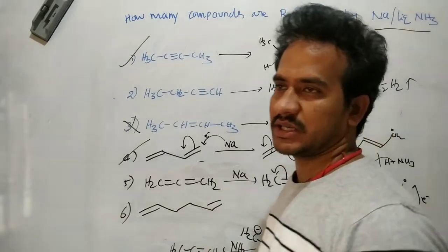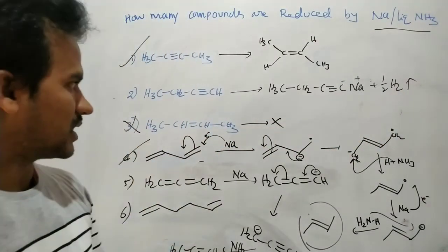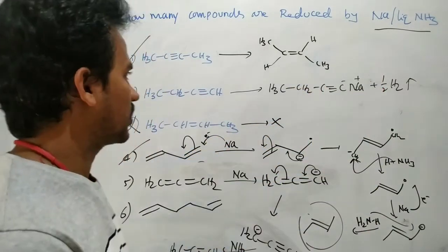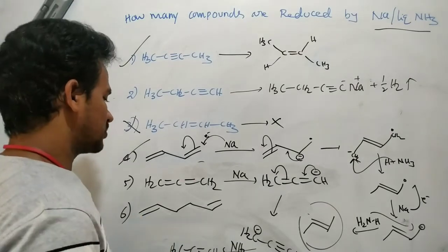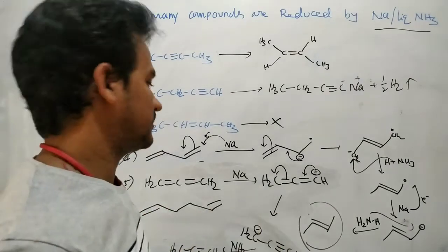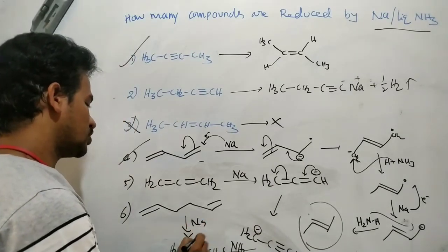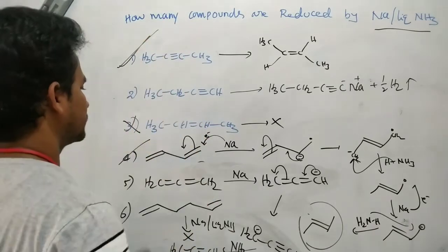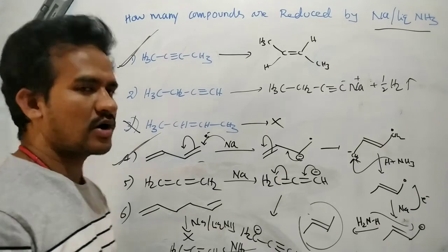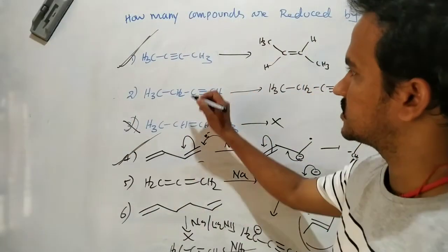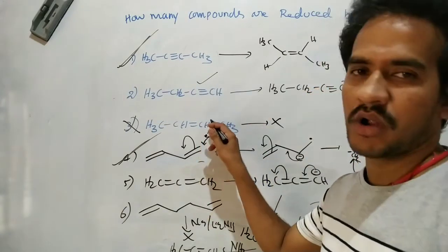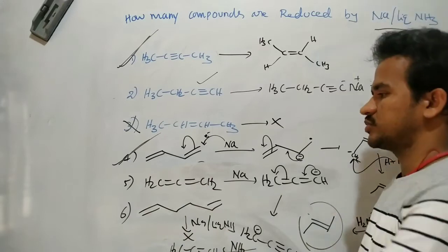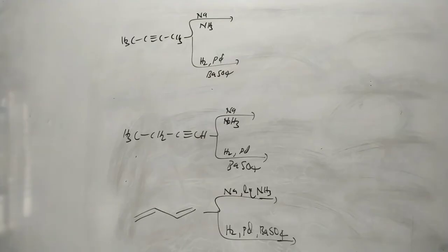So propadiene reacts with sodium liquid ammonia but is not reduced — it is converted to 1-propyne by an acid-base mechanism. 1,3-butadiene is reduced. The terminal alkyne reacted with sodium liquid ammonia but was not reduced. The isolated (non-conjugated, non-cumulated) diene does not react with sodium liquid ammonia at all. In summary: only two compounds are reduced — 2-butyne and 1,3-butadiene.